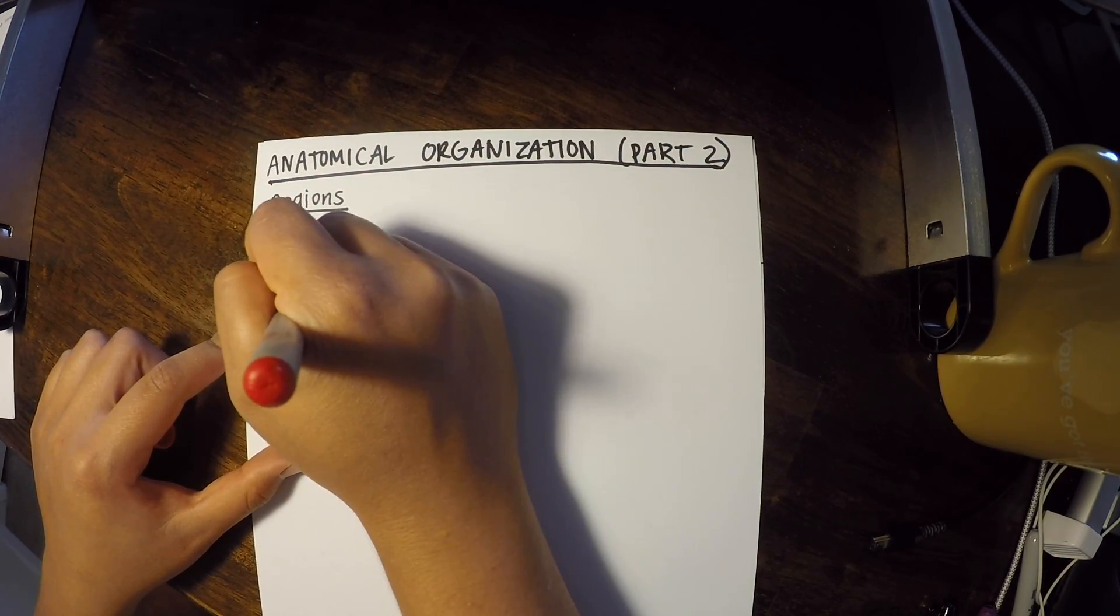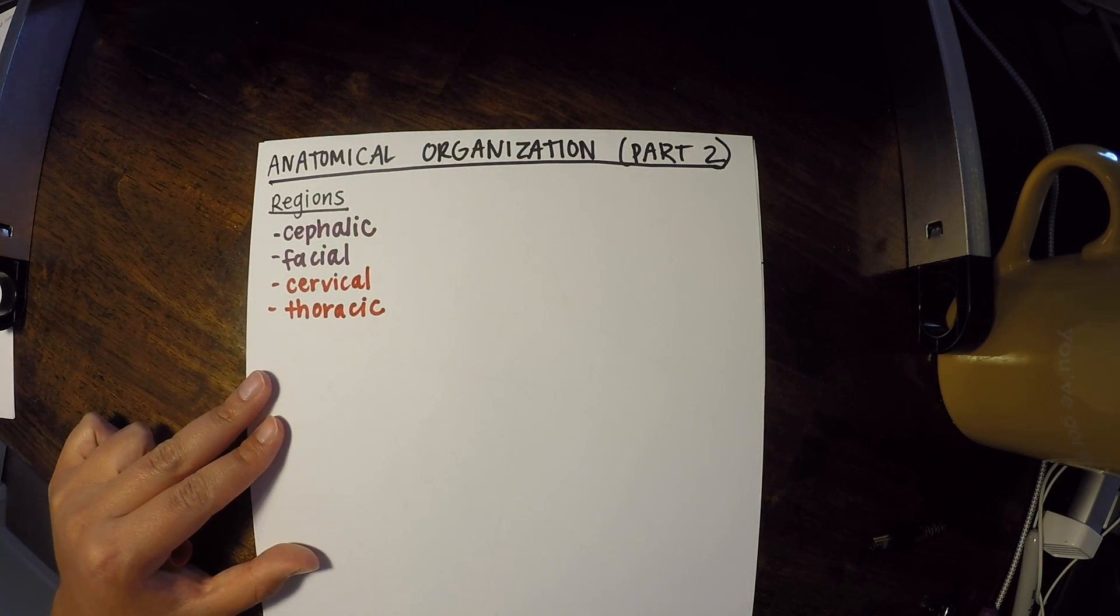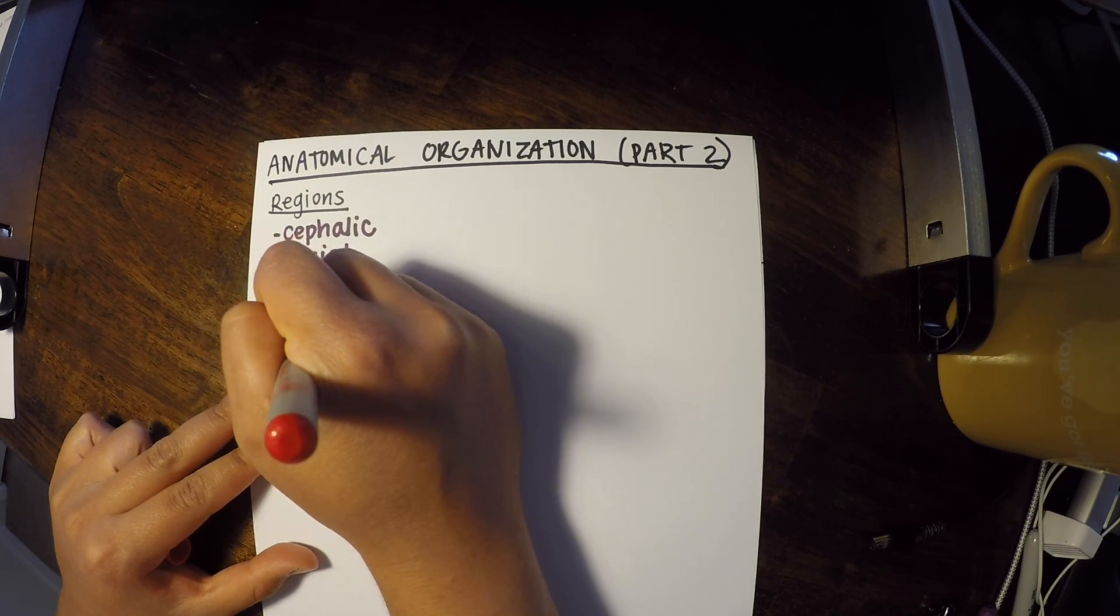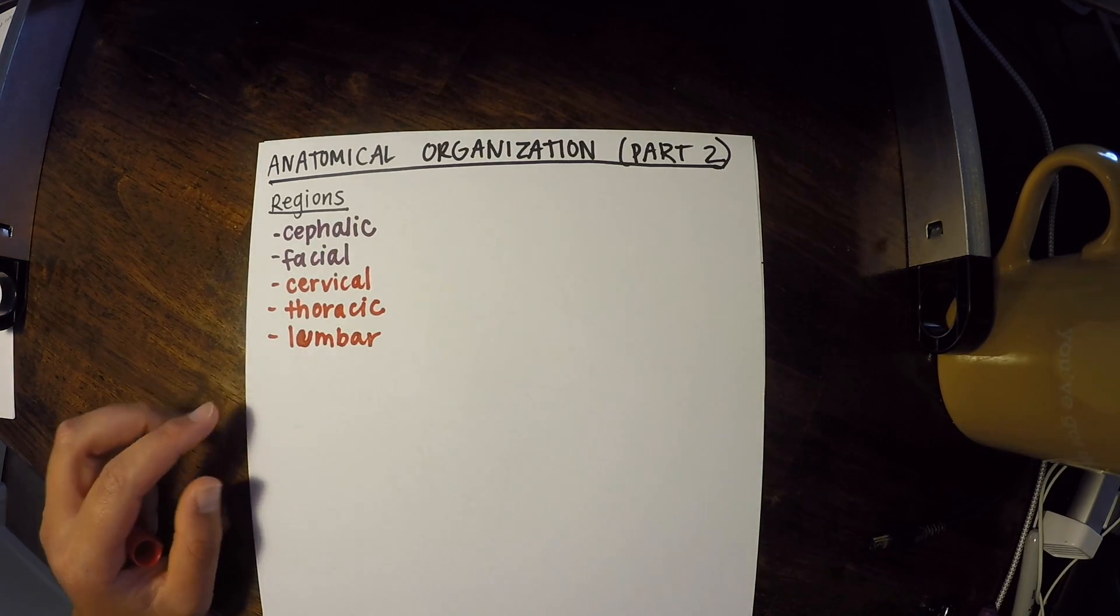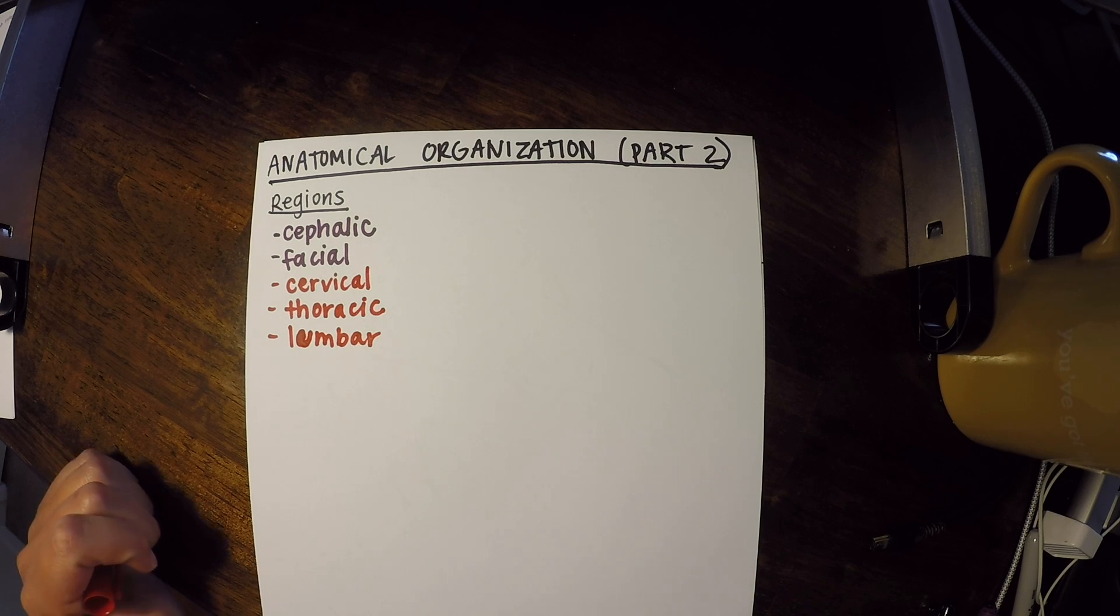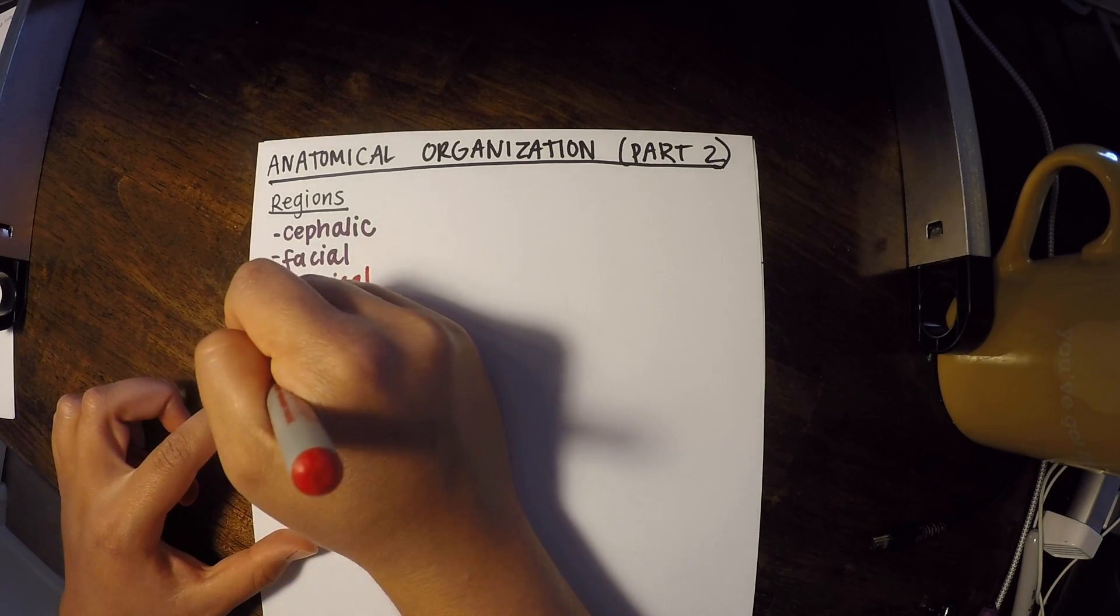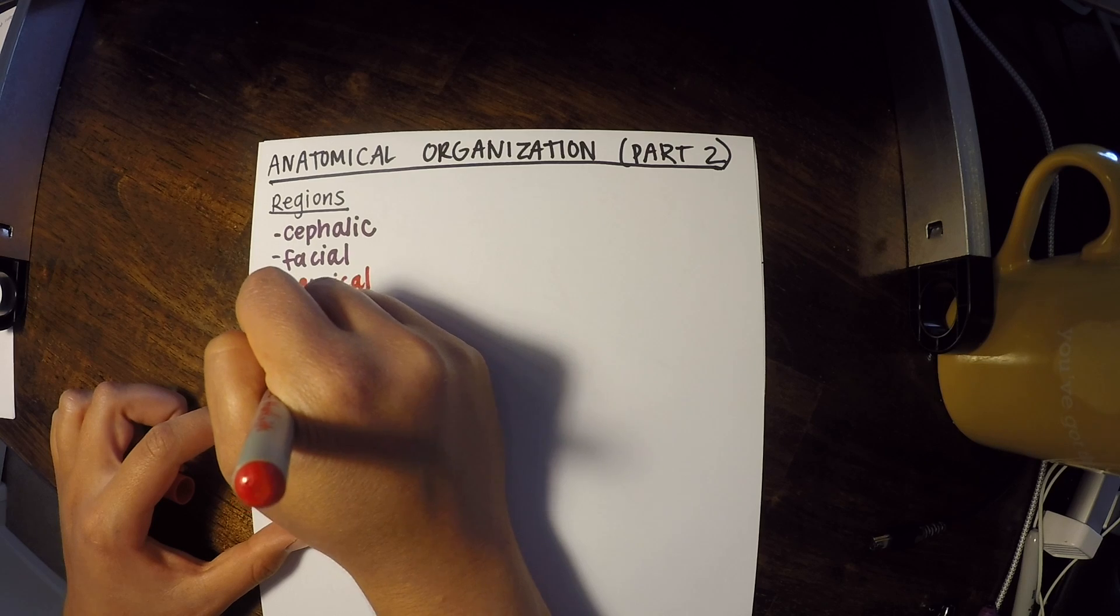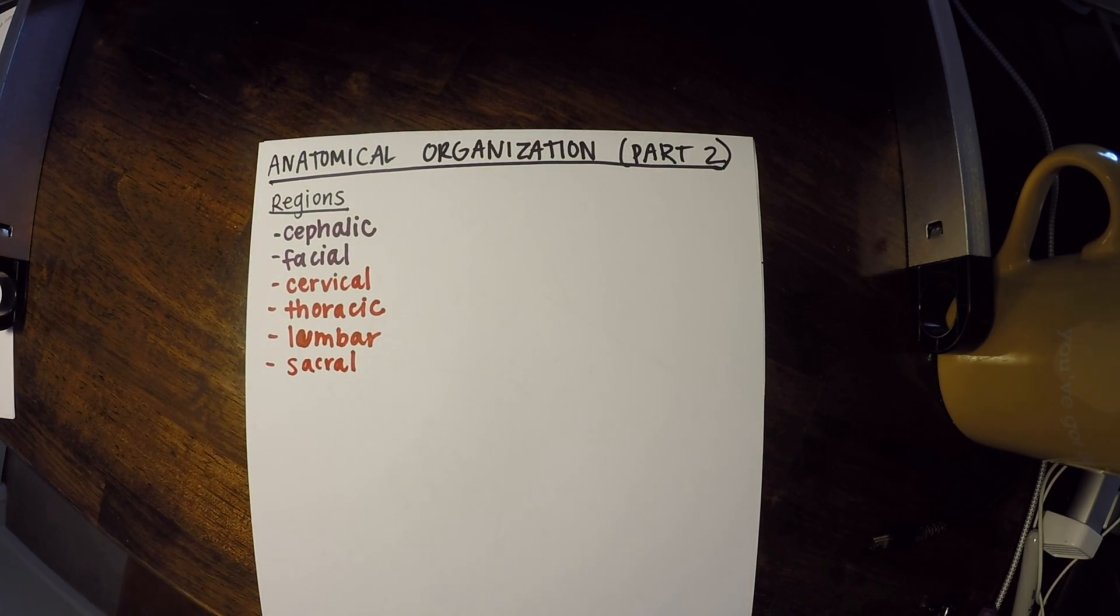Thoracic means mid back. Lumbar means low back. Sacral, your sacrum is actually a bone in your pelvis that sits right below your lumbar spine. So the sacrum is still technically part of the spine and it's just below your low back. So that's what sacral means.